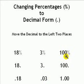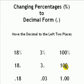With 100%, replace the percentage symbol with a decimal. Go over twice — 1, 2 — and it is 1.00.